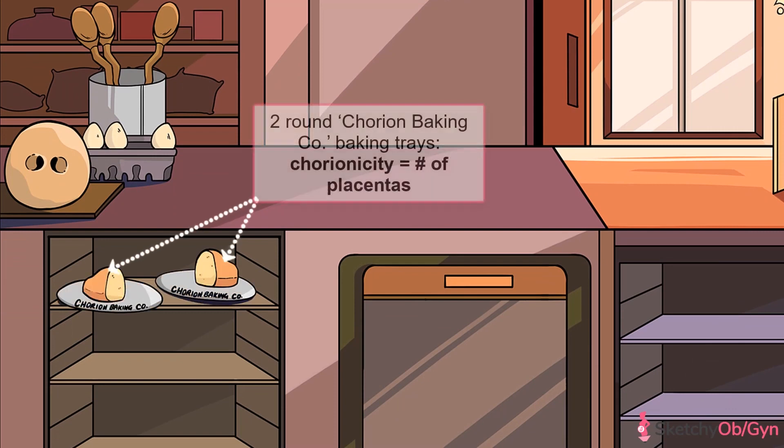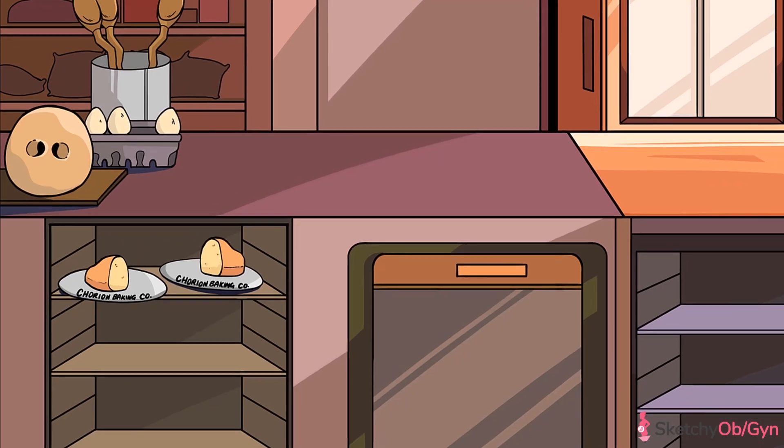But wait — how about the placenta? Is there one big one? Two separate ones? Well, all of this depends on when the division of the zygote occurs. The fancy word for this is chorionicity, and it refers to the number of placentas. We'll represent placentas with these big, round baking trays, because you can't bake bread without them.